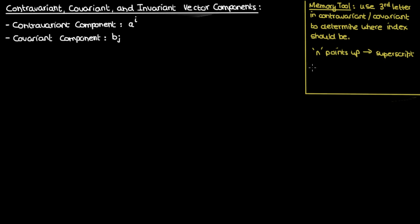For covariant, the third letter is v which points down. This should remind you that covariant components are specified with the index in the subscript, which is down just like how the letter v points down. So hopefully this memory tool should be useful.